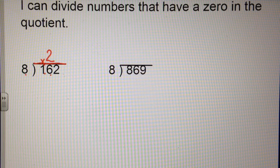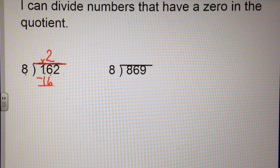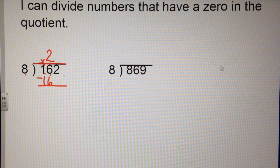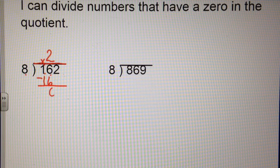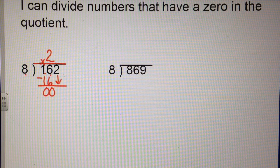Now I'm going to multiply 2 times 8, which is 16. Now I subtract. 6 take away 6 is 0. 1 take away 1 is 0. I bring down my 2.